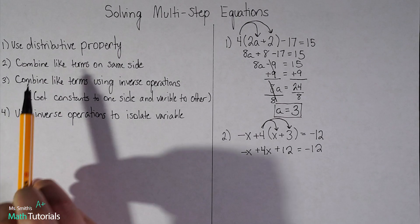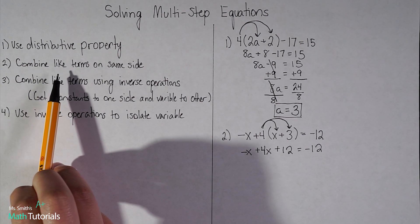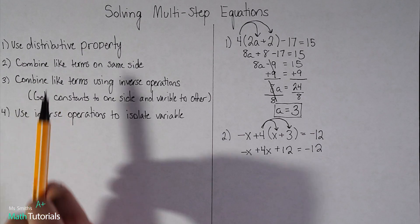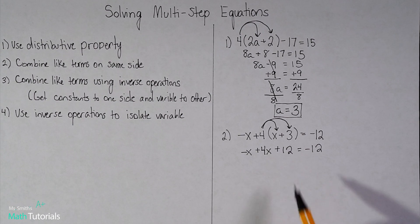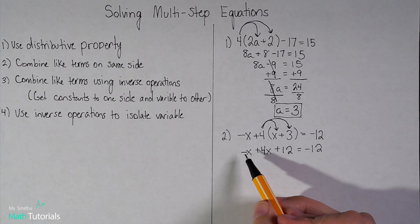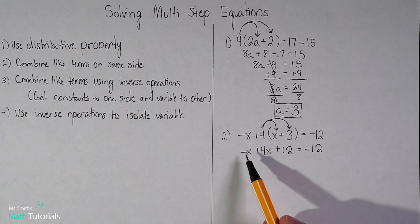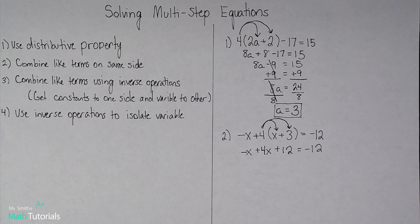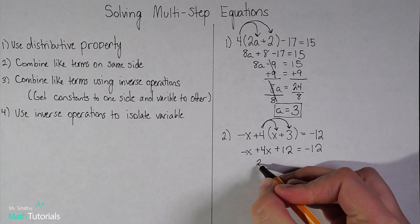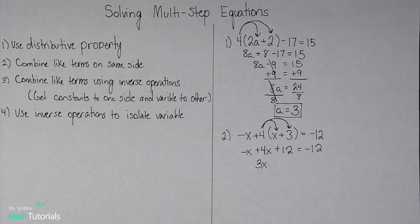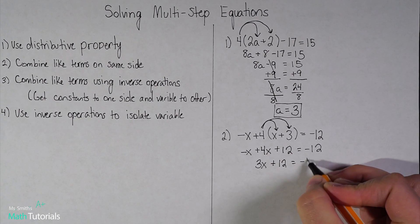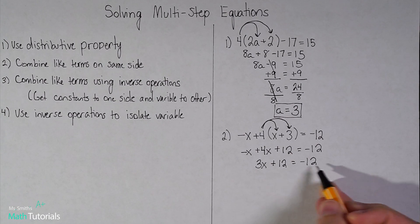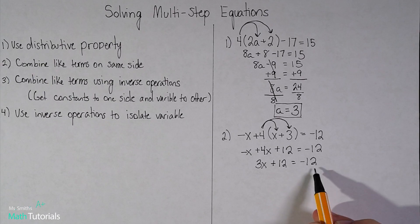Moving on to step 2: combine like terms on the same side of the equal sign. Looking at my left, I definitely have two like terms — this negative x and this positive 4x. I'm going to go ahead and combine those. Remember there's a 1 in front of that x, so this is negative 1 plus 4, which gives me positive 3x. I bring down my plus 12 equals negative 12. I've simplified everything I can on the left and the right.